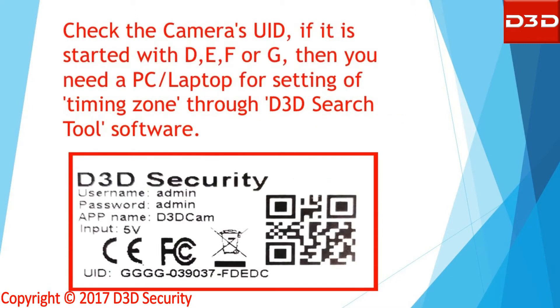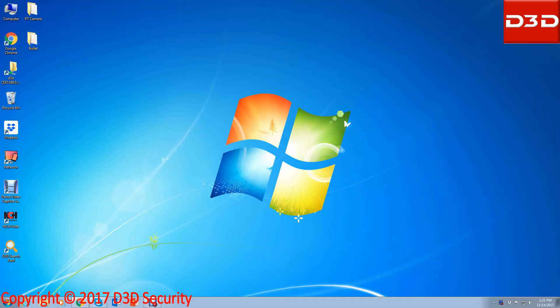Check the camera's UID — if it is started with D, E, F, or G, then you need a PC or laptop for setting the timing zone through the D3D search tool software. Open your internet browser.